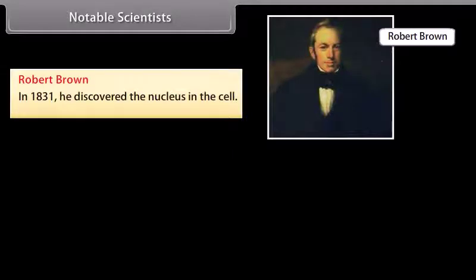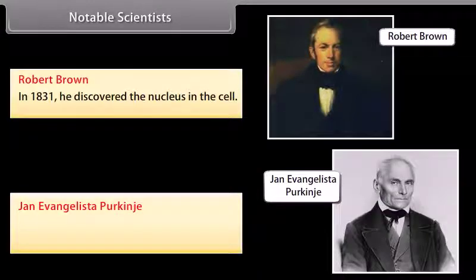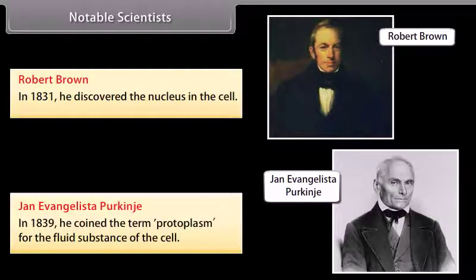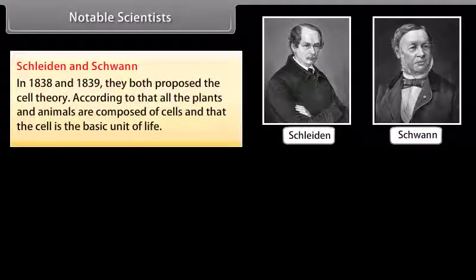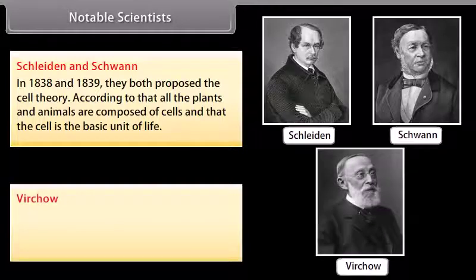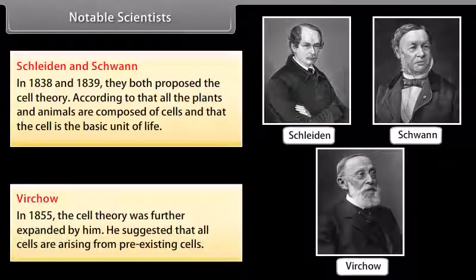Notable scientists: Robert Brown in 1831 discovered the nucleus in the cell. Jan Evangelista Purkinje in 1839 coined the term 'protoplasm' for the fluid substance of the cell. Schleiden and Schwann in 1838 and 1839 both proposed the cell theory, stating that all plants and animals are composed of cells and that the cell is the basic unit of life. Virchow in 1855 further expanded the cell theory, suggesting that all cells arise from pre-existing cells.